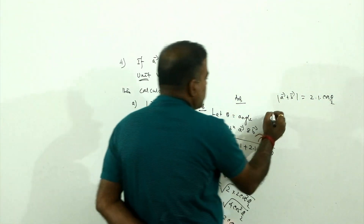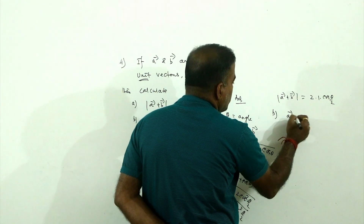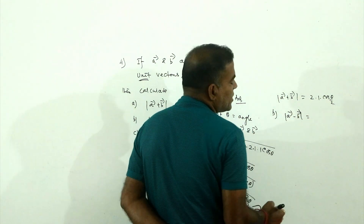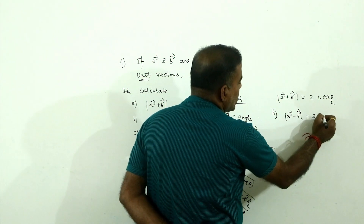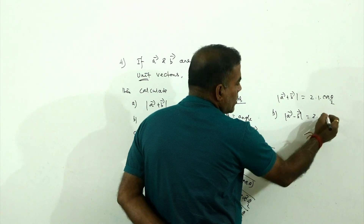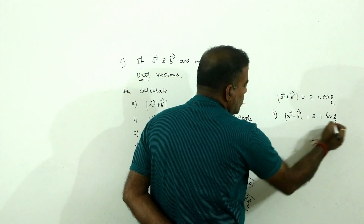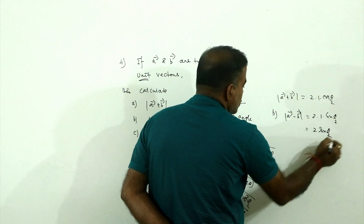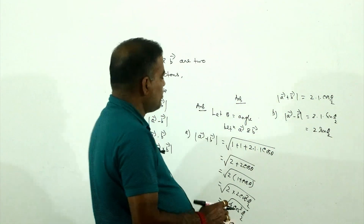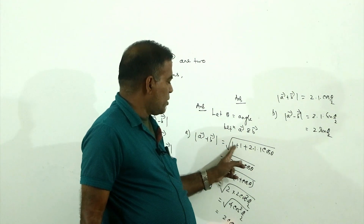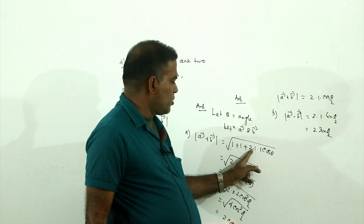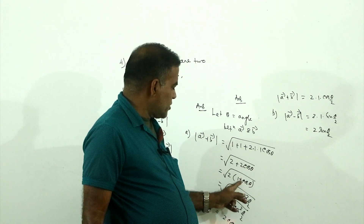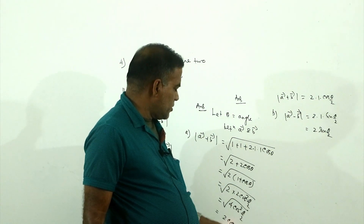Second part: |A minus B|. Using the formula with the minus sign, |A minus B|² equals 1 plus 1 minus 2×1×1×cos θ, which equals 2 sin²(θ/2). So |A minus B| equals 2 sin(θ/2).